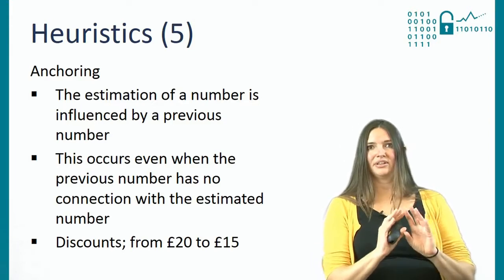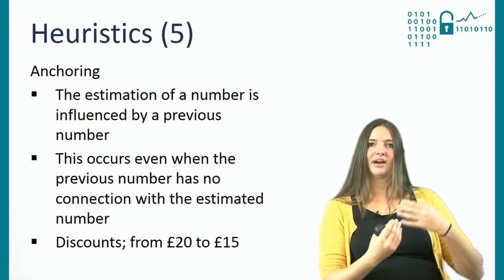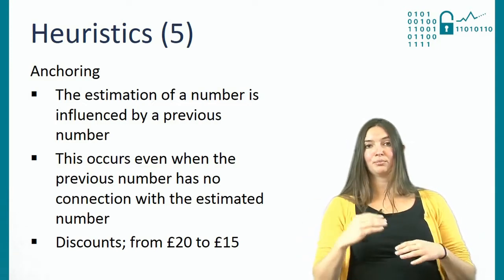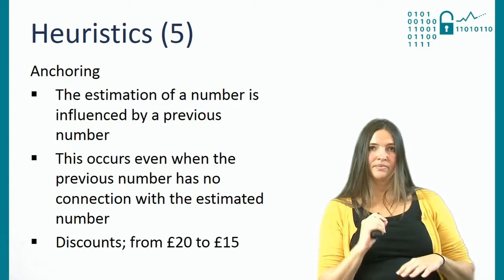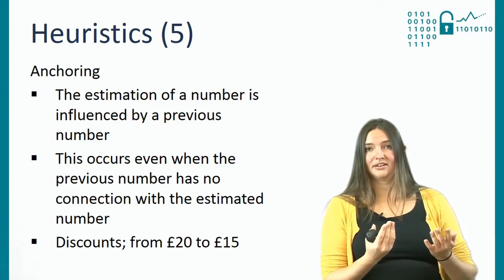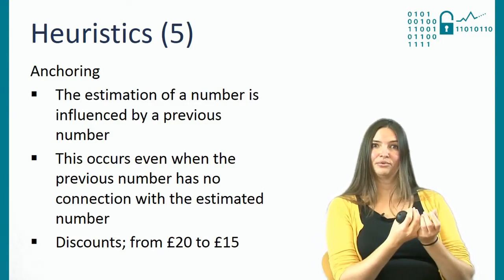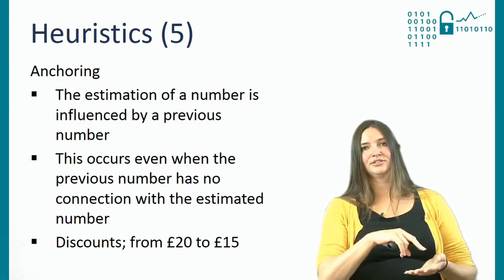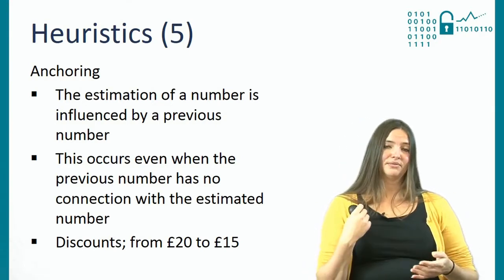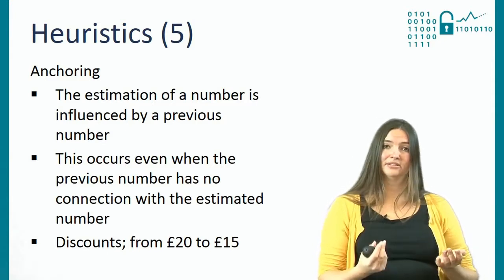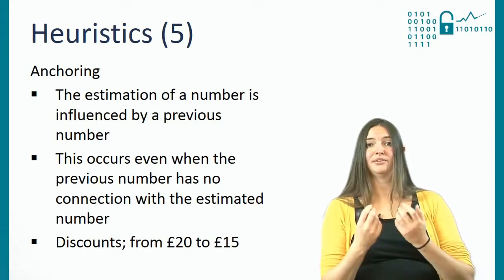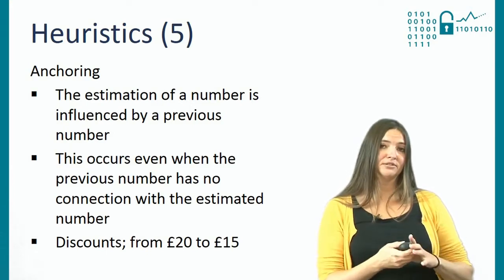The idea is that even if something is unrelated, if you've just said a higher number out loud, you're anchoring it — and therefore, if you then need to say another number, you're more likely to increase your estimate. This is how discounts work. Whenever you see a sale in a shop window, it anchors the original higher price and shows you the new price, which looks better because it's lower. So if you have a discount from £20 to £15, it's 25% off — whereas if the same item was just priced £15, you might be less likely to buy it.